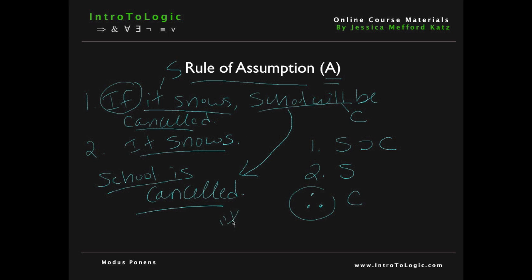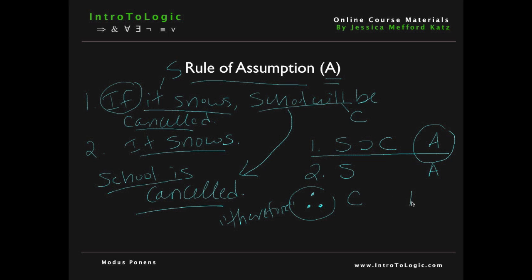Notice that the therefore sign can be symbolized with three little dots in the shape of a triangle, and that just means 'therefore.' Furthermore, when we do our formal proofs, we'll have to write what rules we used to infer each premise — so to the right of the line, be sure to write what rule you used. Here we have an assumption, and premise two is also an assumption. We use line one and line two and the rule of modus ponens — which we'll learn about in a second — to infer the conclusion C. And that's how we use the rule of assumption.